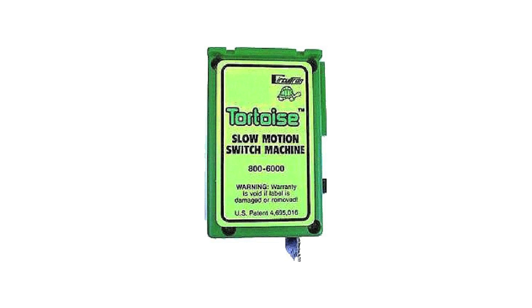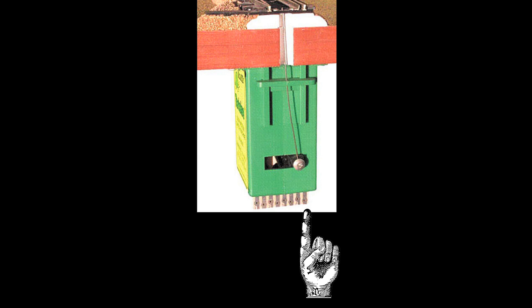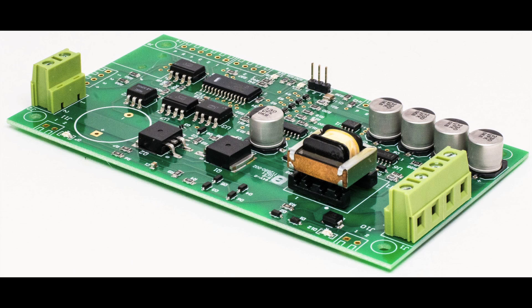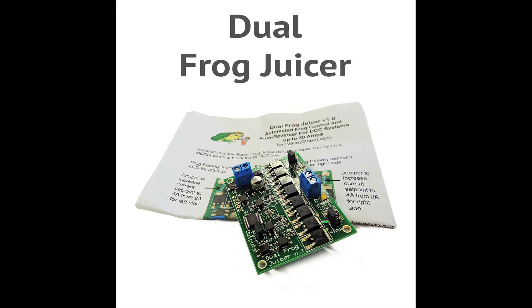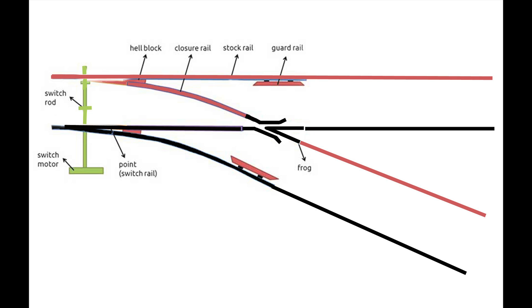If you're using a commercially available switch machine like the Tortoise switch machine, it has built-in switches—a double pole double throw switch built right in. Or we mentioned if you're using DCC, you can use a frog juicer similar to these, and those will route power to your frog as soon as your wheels touch the frog. It will automatically align the polarity of the frog to match your locomotive. Any of these systems will work in creating a selective switch.